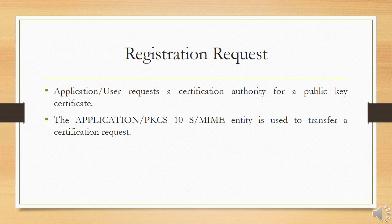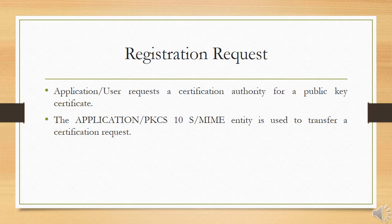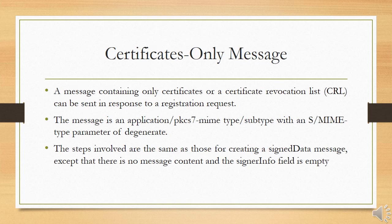For a registration request, an application or user applies to a certification authority for a public key certificate. The PKCS #10 S/MIME entity is used to transfer a certification request. The certification request includes a certification request info block, followed by an identifier of the public key encryption algorithm, followed by the signature of the certification request info block made using the sender's private key. The certification request info block includes the name of the certificate subject and a bit string representation of the user's public key.